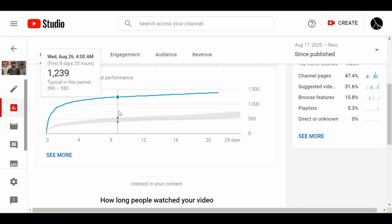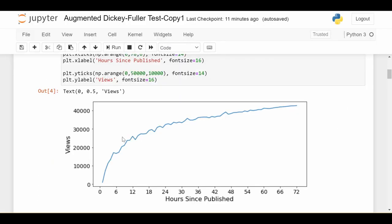But as time goes on, the growth of the video usually slows down. Let's say we're trying to forecast the number of views that this video will receive in the next three hours. We have 72 hours of data so far.